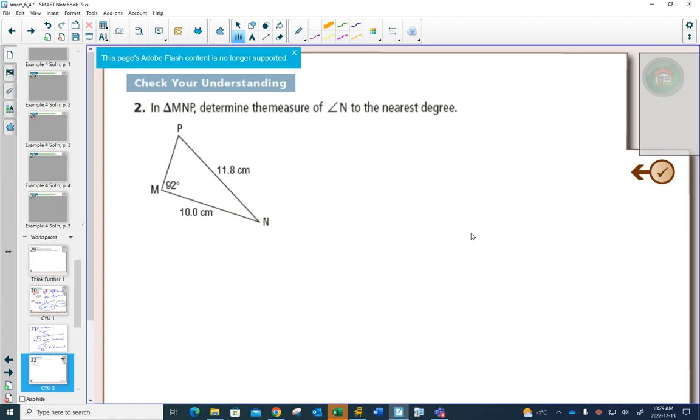Here, we don't have a right angle triangle. We want to solve for angle N. So that's this angle right there.